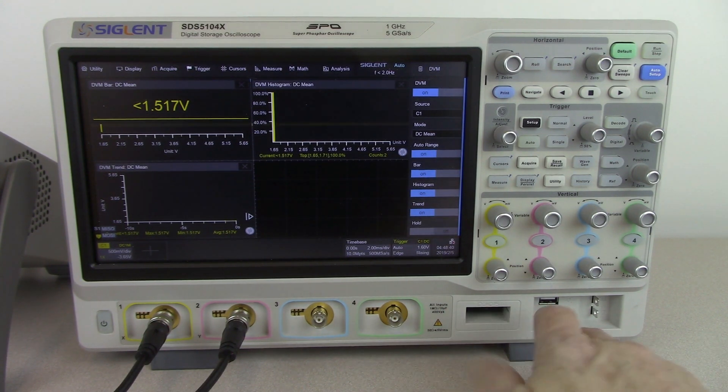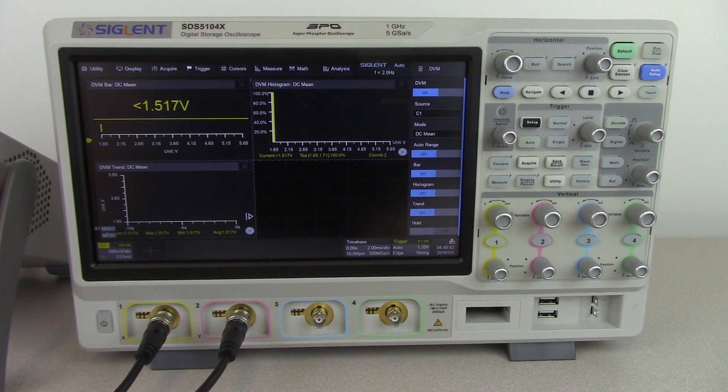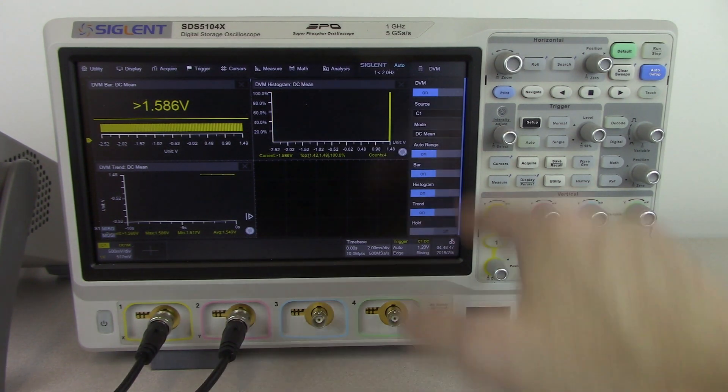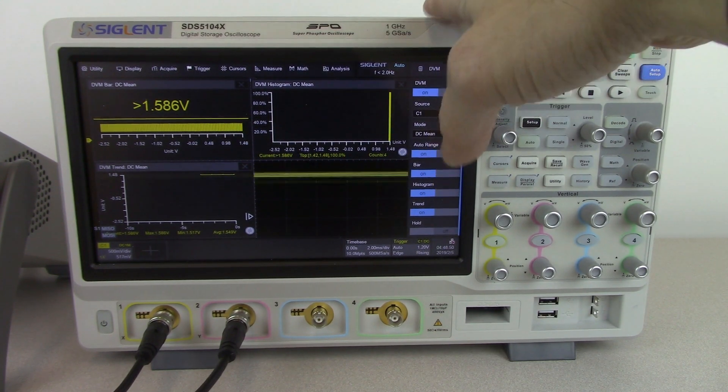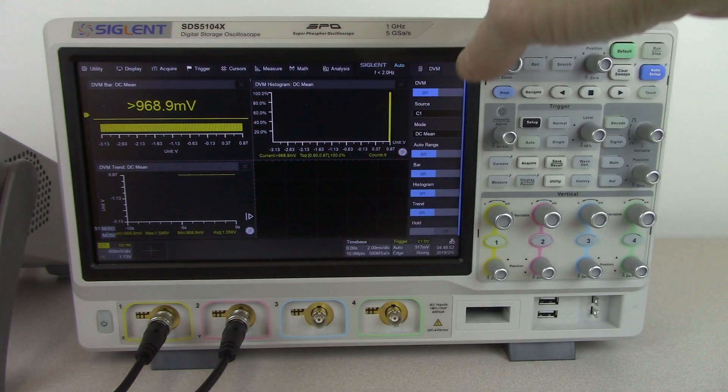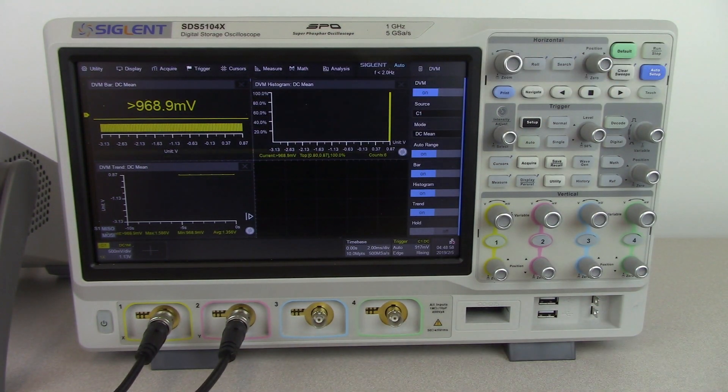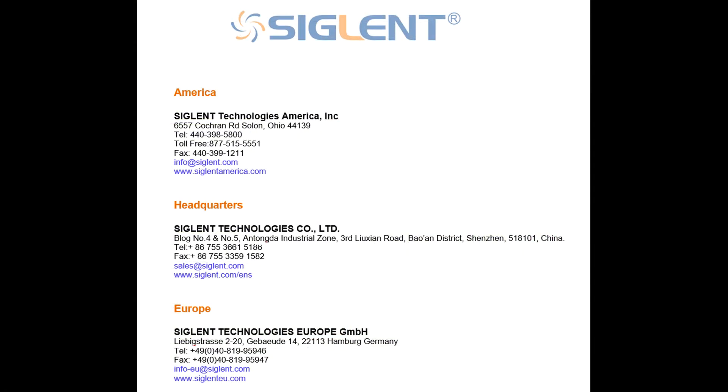The options are the mixed signal, an external waveform or wave function generator, and then the specialized serial decoding. All of this starts at around $2,400 US for the 350 megahertz 2 channel model. The 1 gigahertz 4 channel model is around $7,000 to $7,500 US depending on tax and shipping. If you have any further questions about the SDS-5000X or any of the measurements we've shown today, please drop us a line. Contact your nearest Siglent office and we'd love to have a conversation with you. Thank you very much and have a great day.